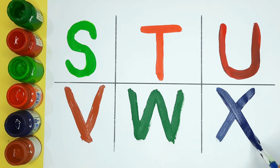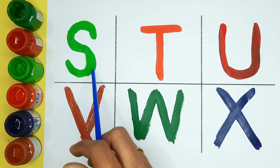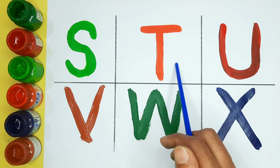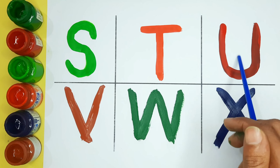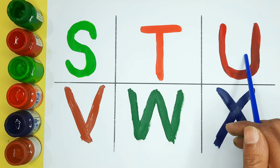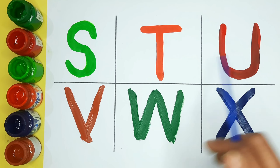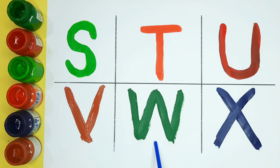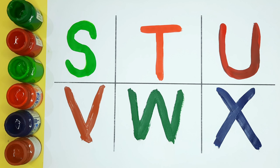X is for xylophone. S is for strawberry. T is for tiger. U is for umbrella. V is for vase. Blue — W is for watermelon. X is for x-ray. Thank you!